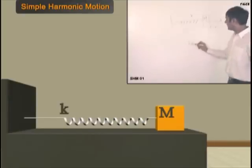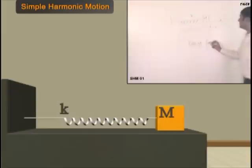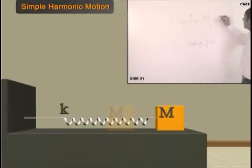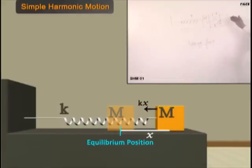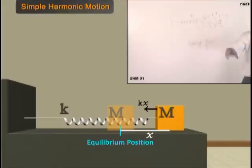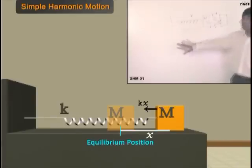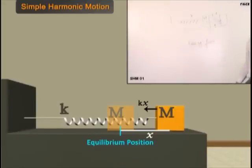If restoring force — if I disturb a body from its equilibrium position and the force acts on the body which is opposite to the displacement. Suppose the displacement is towards the right; the spring force is towards the left, kx, where x is the displacement. So if the force acting on the body is in the opposite direction to the displacement from equilibrium, such a force is called a restoring force. The force is trying to restore the body back to its original position. Whenever there is a restoring force, such motion is harmonic in nature.